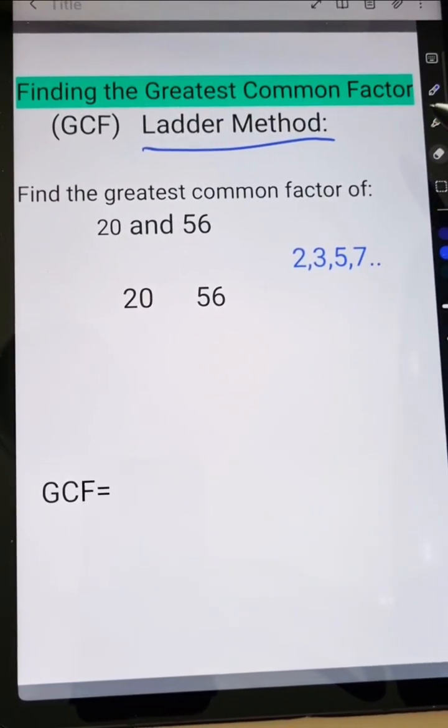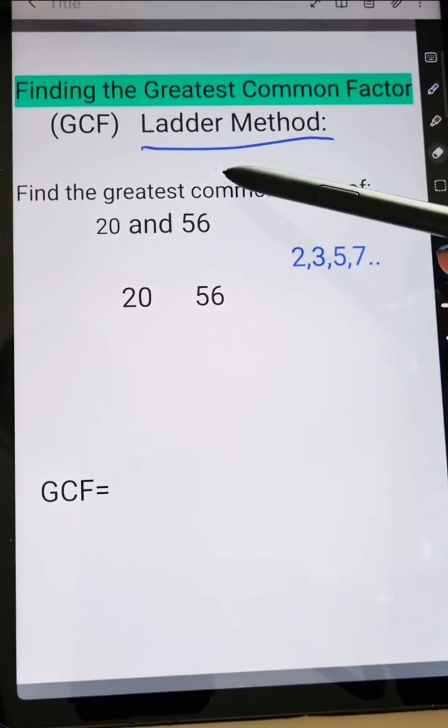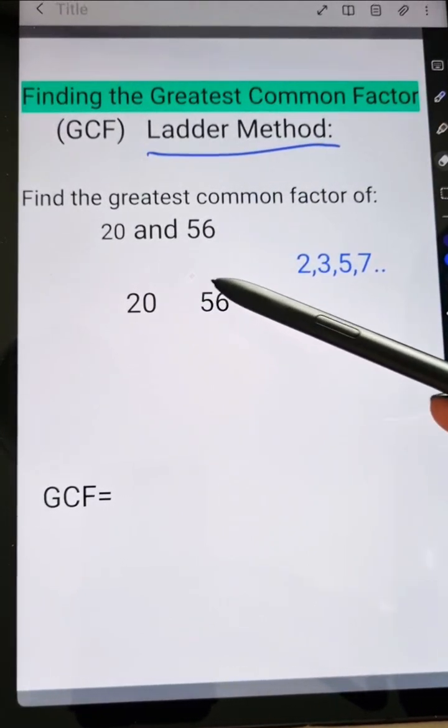This is the easiest way on how you can find the greatest common factor or GCF using the ladder method. So find the GCF of 20 and 56.